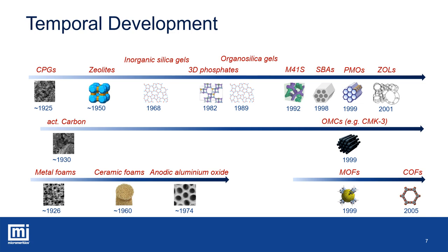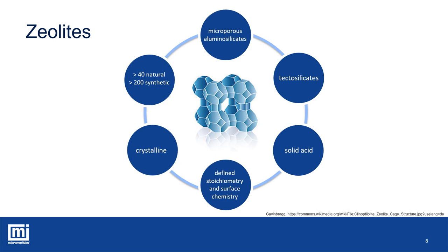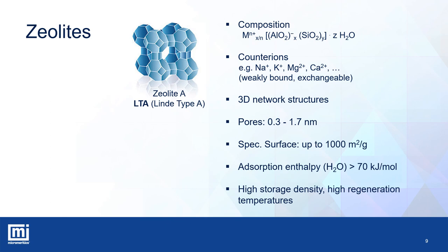Zeolites are microporous aluminosilicate minerals belonging to the group of tectosilicates, also referred to as framework silicates, due to their three-dimensional framework structures. There are over 40 natural and more than 200 synthetic structures reported. The name zeolite is derived from the Greek words for boiling and stone, and goes back to Swedish mineralogist Axel Friedrich Cronstedt, who observed that heating such a mineral produced large amounts of steam from water absorbed by the material. Zeolites show nice crystallinity, as well as defined stoichiometry and surface chemistry. The structures can function as solid acids, due to the composition: the framework is assembled from silica and alumina tetrahedra, and the structure shows one negative charge per alumina entity. Therefore, the structure also contains counter ions that are weakly bound and can be exchanged with, for instance, protons or ammonia.